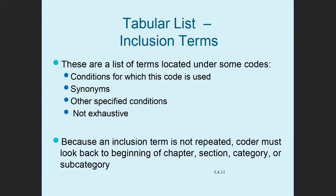Inclusion terms are a list of terms located under some codes in the tabular list. They provide additional information — conditions for which this code might be used, synonyms for this condition. Sometimes they use a syndrome name or somebody's name in the title. The list is not exhaustive; it's not everything that might be coded here. Also, just like with the seventh digit box, an inclusion term is not repeated throughout — it may be only in the category, and you may be on a different page by then. So go back to the category or other codes in the section to see if there's an inclusion term.